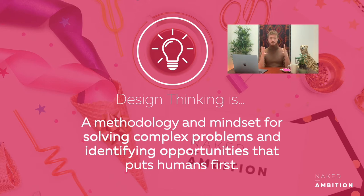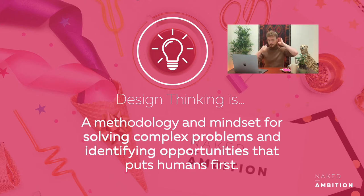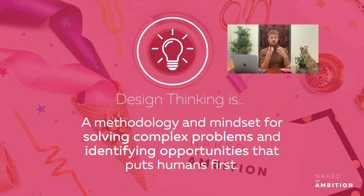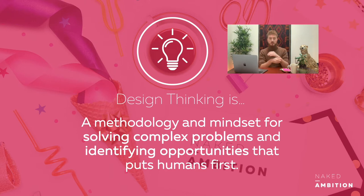I know that's a mouthful, so let's look at it again. A methodology means it's a clear step-by-step approach. And a mindset means it talks about a way of thinking for solving complex problems — oftentimes problems with a lot of stakeholders, not just one viewpoint. Identifying opportunities means we're not just looking at the problem, but switching it around to see the underlying opportunities. That puts humans first — it looks at what humans need, what humans want, and then looks at the problem through that lens. We call it the human-centered lens of design thinking.